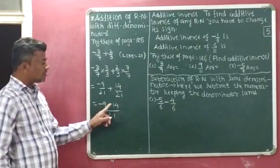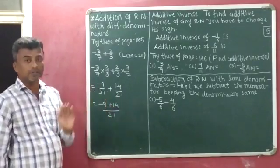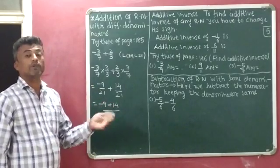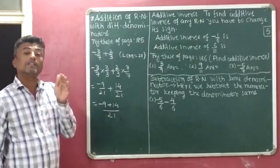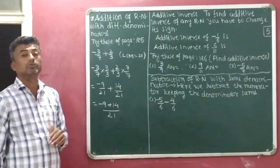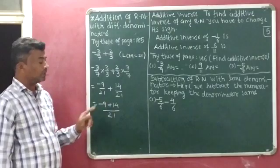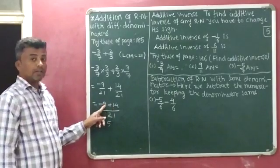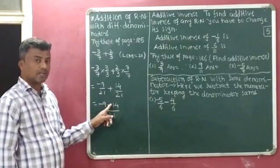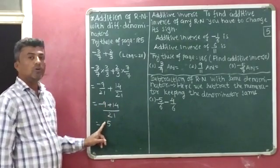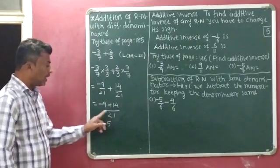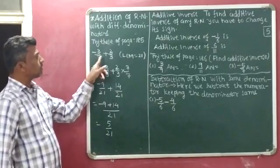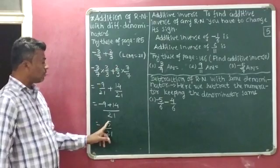Now see: 9 has a minus sign and 14 has a plus sign, so this is the addition of integers with different signs. When both integers have different signs, we subtract them and give the sign of the greater integer to the answer. We do 14 minus 9, which equals 5. Since 14 is greater and has a plus sign, the answer is positive 5. So the answer is 5 by 21.